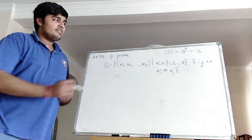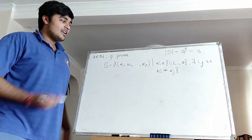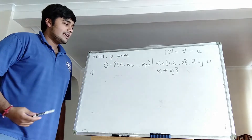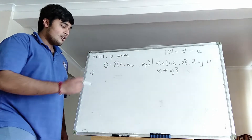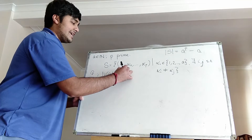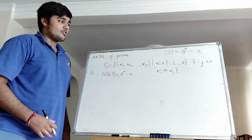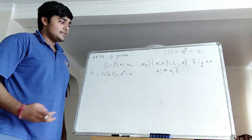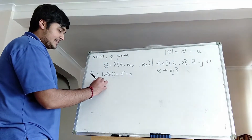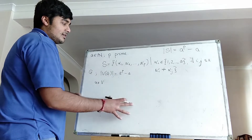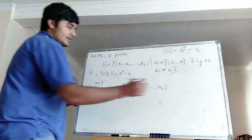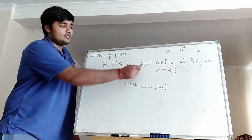Now let's talk about graph theory in order to prove Fermat's Little Theorem. I want to construct a graph G which represents S in some way. Each of the vertices in G represents a distinct sequence in S — a distinct element in S. So the number of vertices in the graph, the cardinality of V, is going to be precisely A to the P minus A, because for each vertex we have a corresponding sequence in S and vice versa.